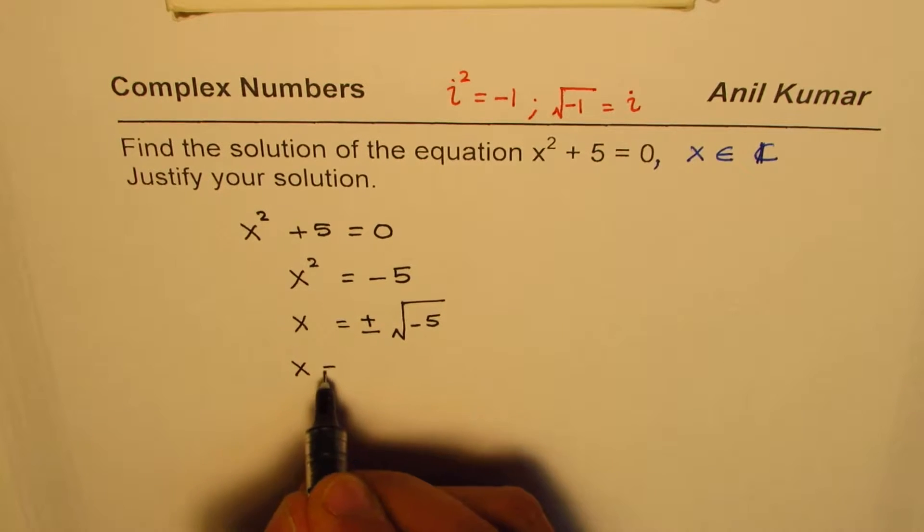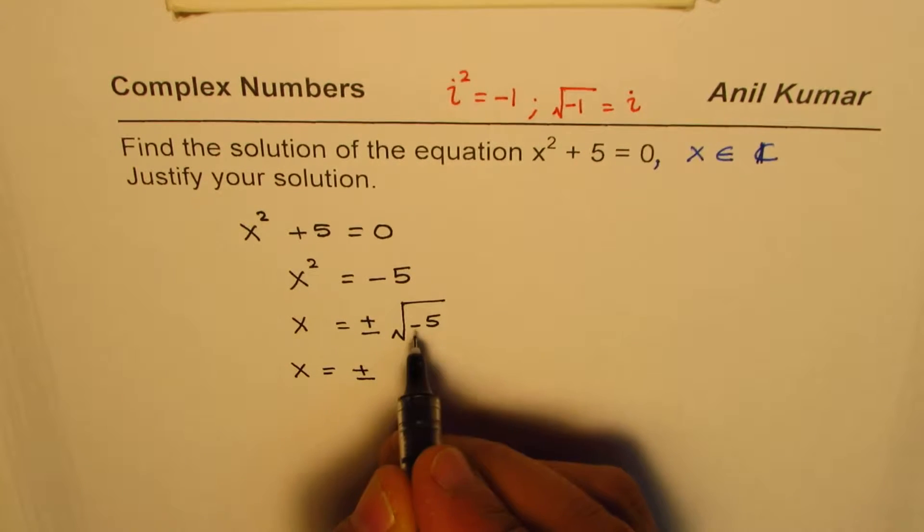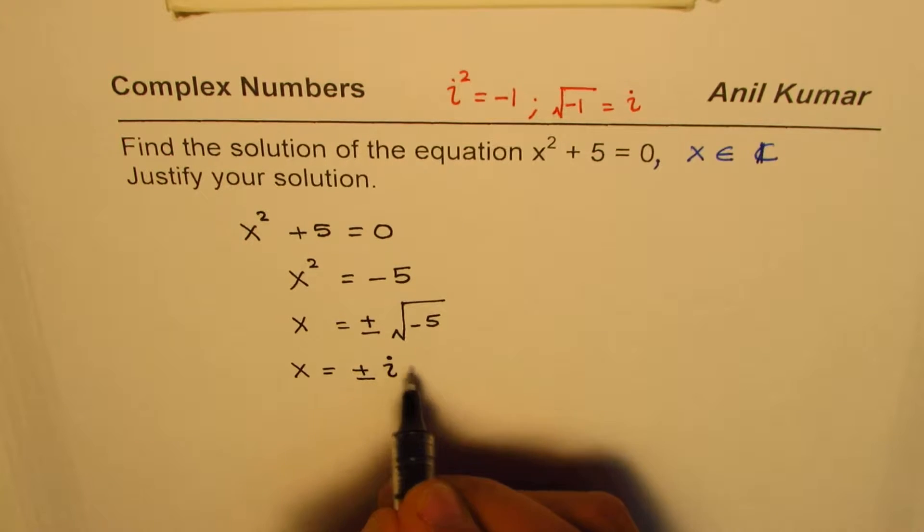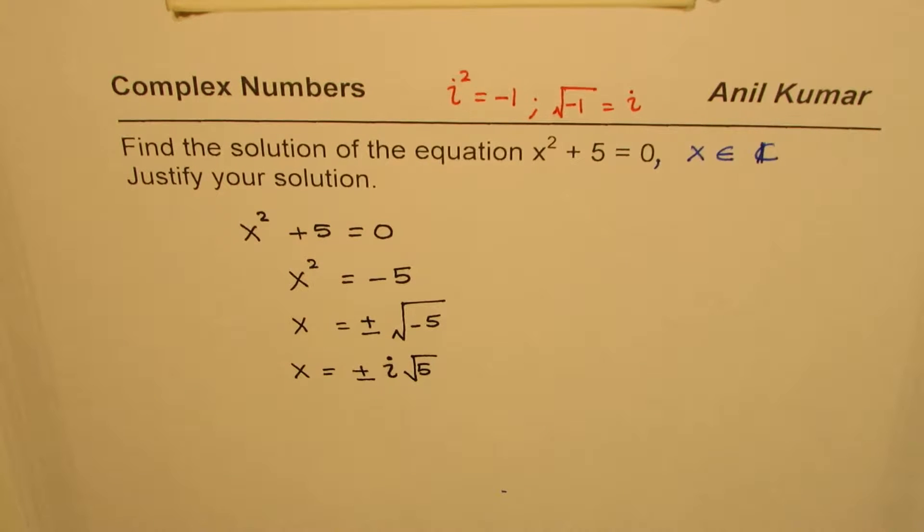So we say, well, x is equal to plus and minus this negative. So the negative can be brought out as i√5. Do you get the idea? So that becomes the solution for the given equation.